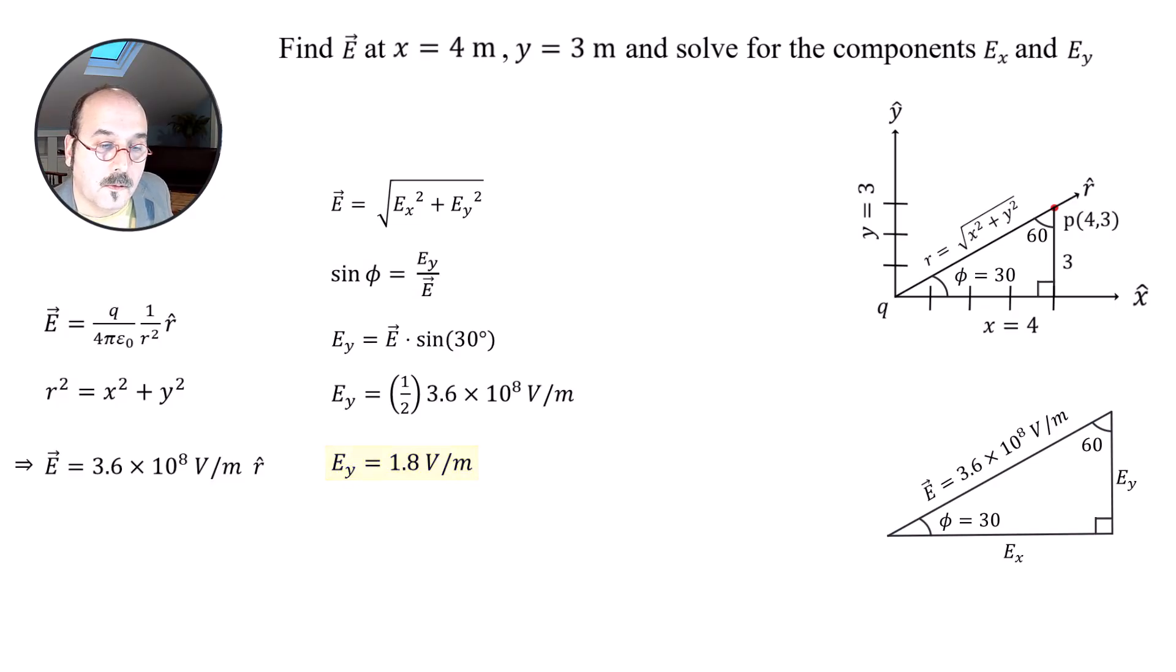And now we'll make some space over here and we'll go ahead and solve for X, for the X component. So to do that, you could use 60 degrees, you could use 30 degrees. I'm going to go ahead and say cosine. We know that cosine of phi is going to equal the adjacent component. So this is going to be E_X divided by E.